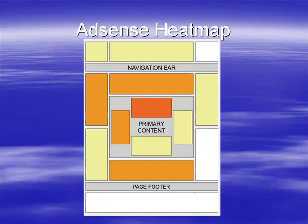I'd also try a banner at the bottom and test performance there. The darkest orange, right in the middle, is where people's attention is most focused. The next lighter shade of orange is also a popular place that draws people's eyes. Where there are white blocks, basically don't bother putting ads — Google's own testing has found that nobody really looks at or pays attention to those areas. This gives you a clear idea of where to place your adverts.